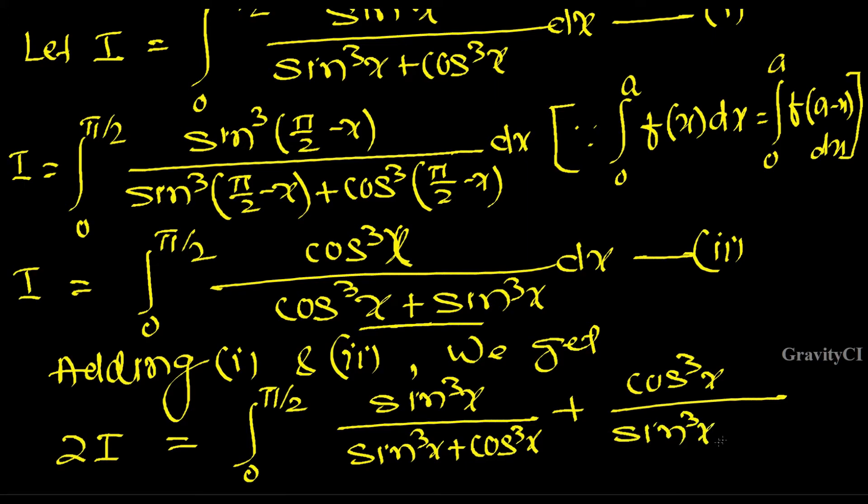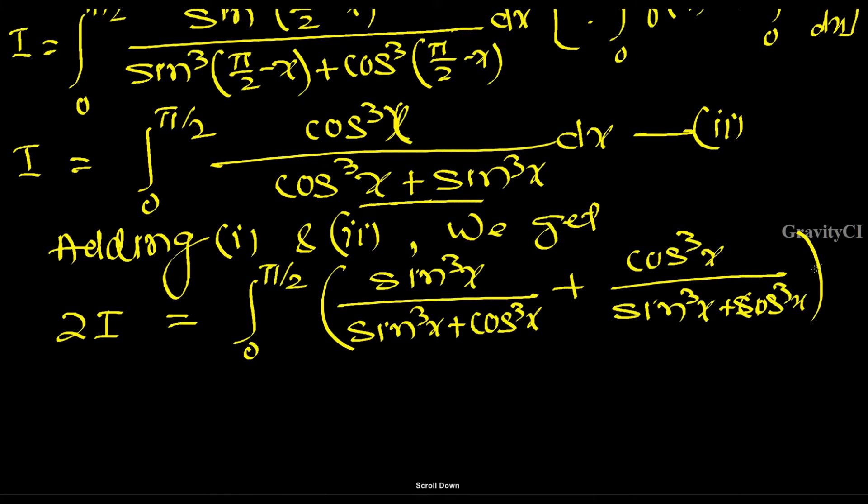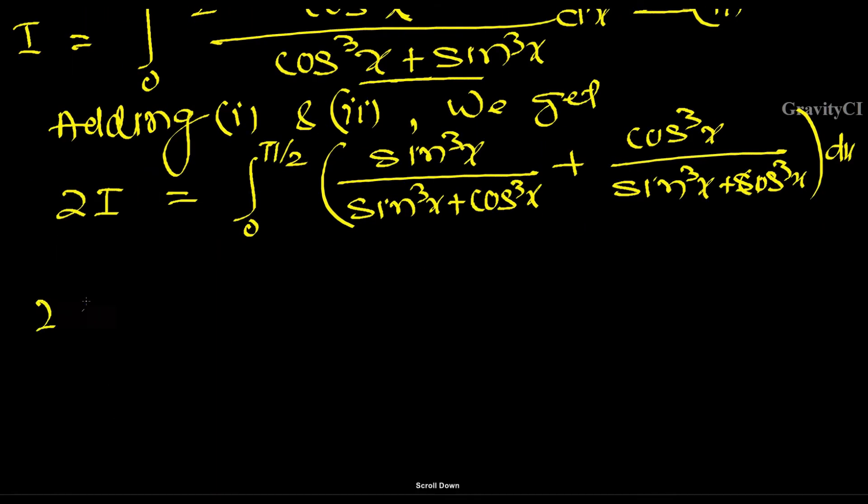So 2I equals integral 0 to π/2, and the LCM will be sin³x plus cos³x, and it will combine in the numerator because the denominator is identical.